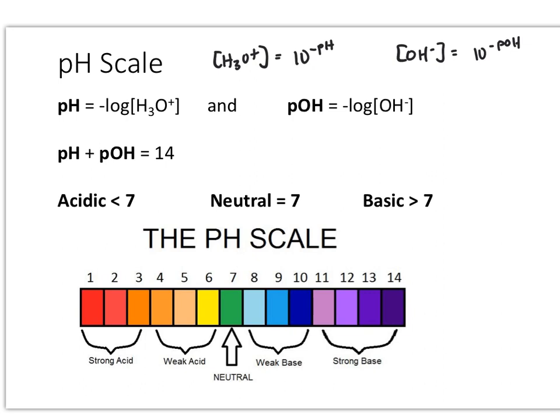Let's talk about the pH scale. A pH of 7 is neutral — pure water would be an example of something with a pH of 7. If I am below 7 on the pH scale, I'm going to be acidic. If I'm above 7, I'm going to be basic. Make sure you're familiar with the scale, being able to identify acids and bases, as well as calculate the concentrations or pH and pOH of each substance being analyzed.